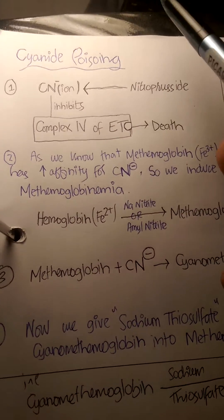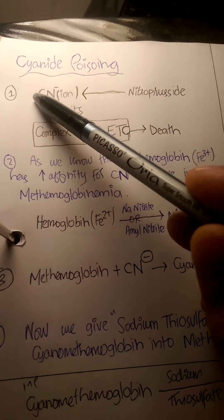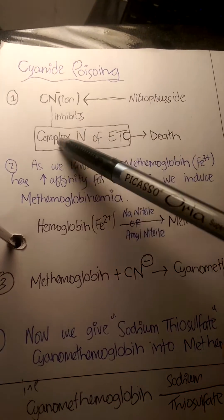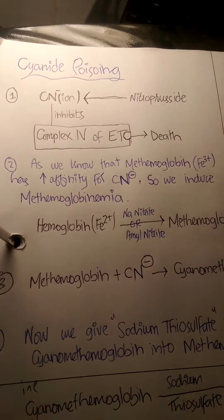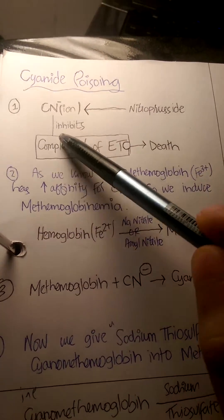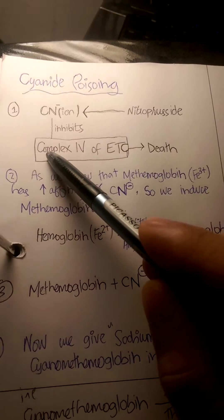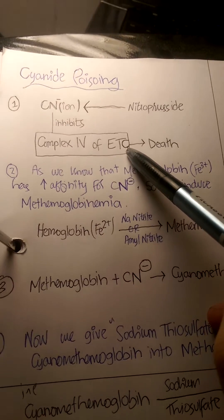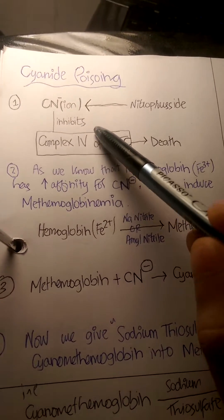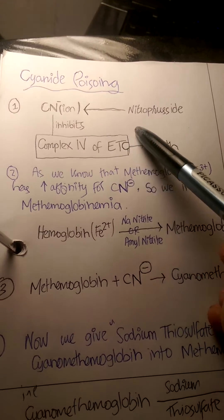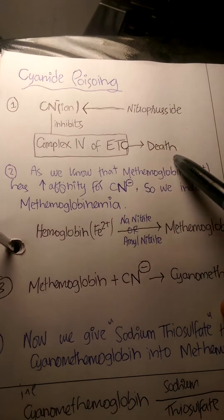First, we should understand what cyanide is and how it causes poisoning. Cyanide generates cyanide ions, which inhibit Complex IV of the electron transport chain. When Complex IV is inhibited, there's decreased ATP production which can result in death.